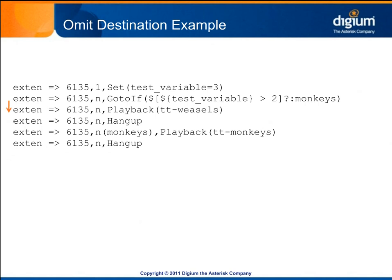Both of our previous examples had multiple priorities set up to call the hangup application. This is important because it separates the different branches. If the hangup weren't listed between the two playbacks, dial plan execution resulting in ttweasels being played would also have played ttmonkeys right afterwards. It's much more common for conditional branching to be used to go one way or another, but not both.